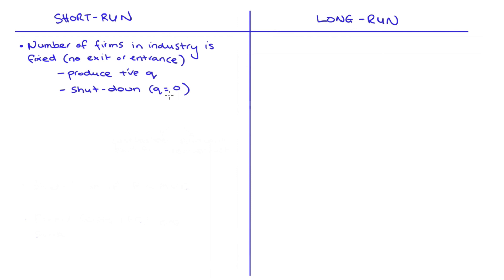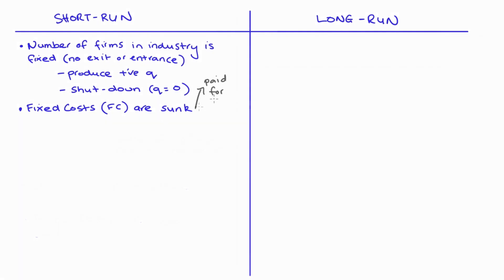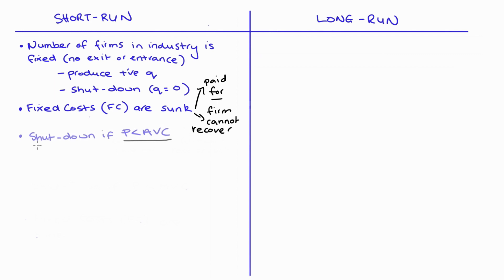In the short run the fixed costs that the firm incurs are what we call sunk costs. A sunk cost is one where the firm has already paid the cost — the money has been spent and there's no chance of getting that money back. The presence of these sunk fixed costs means that the shutdown rule is: shut down if price (P) is less than average variable cost (AVC).